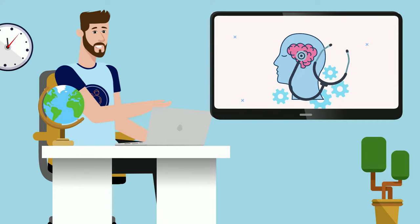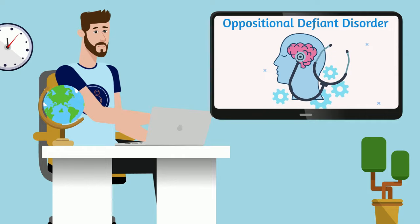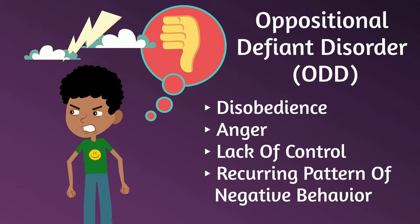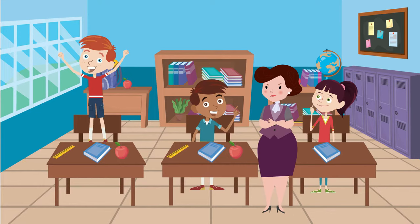Hello and welcome to another video about behavior disorders. Today we're going to talk about oppositional defiant disorder. Oppositional defiant disorder, or simply ODD, usually affects children and is characterized by disobedience, anger, lack of control, and a recurring pattern of negative behavior. It is often challenging for caretakers and educators to deal with kids who suffer from this disorder.